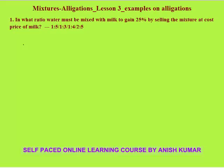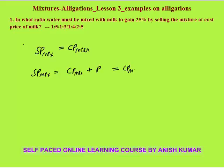In what ratio must water be mixed with milk to gain 25% by selling the mixture at the cost price of milk? We are selling the mixture at the cost price of milk. Now, selling price of mixture is always equal to cost price of mixture plus profit. Since we are gaining 25% as given in the question, profit is 25% of cost price of mixture.